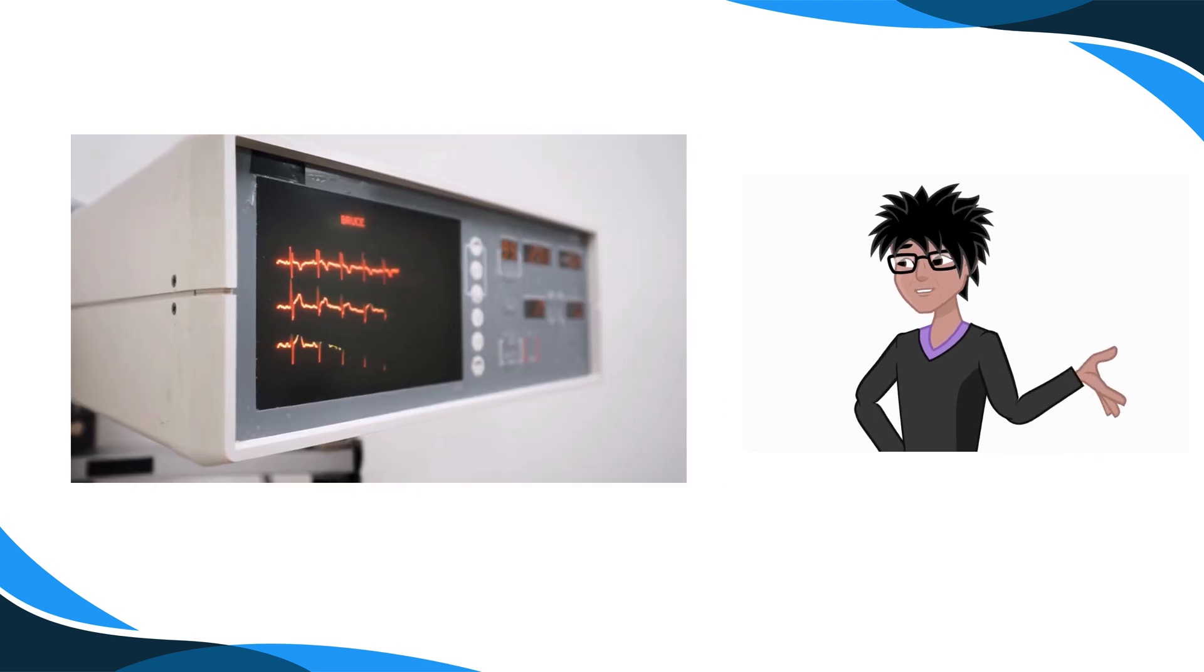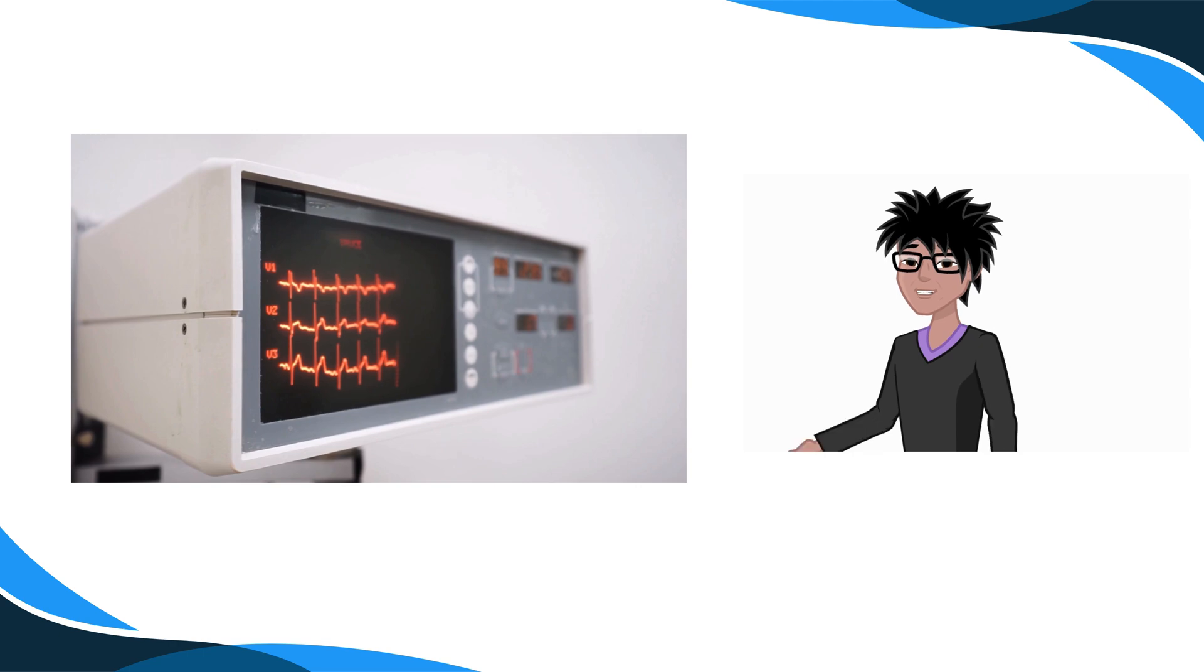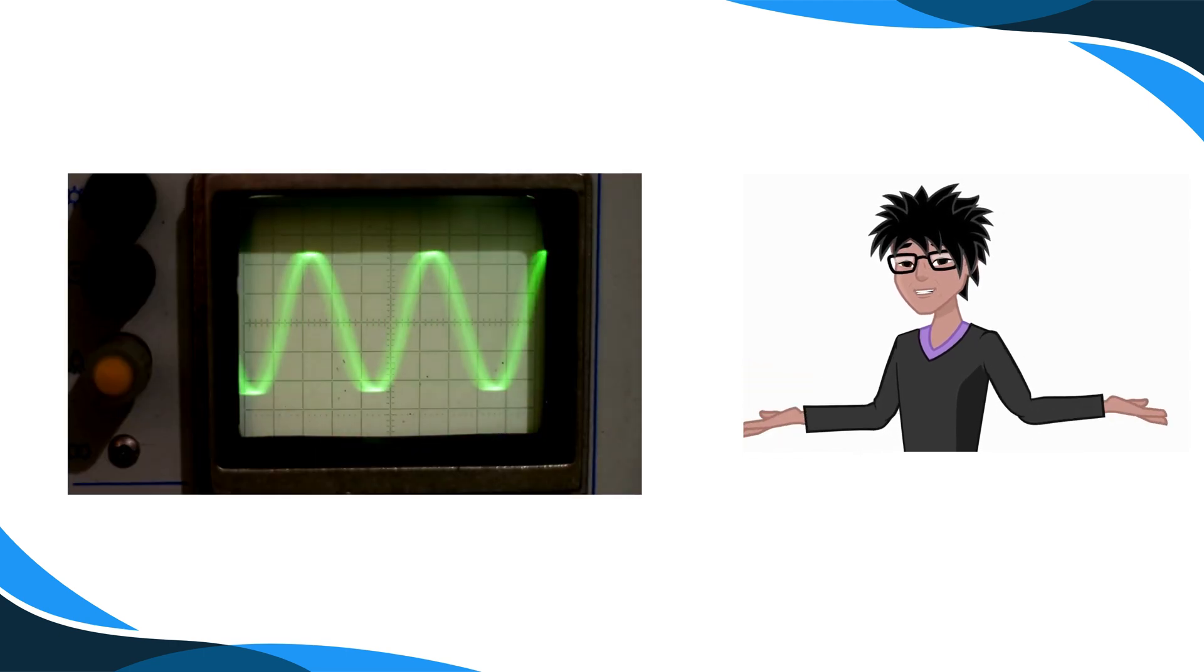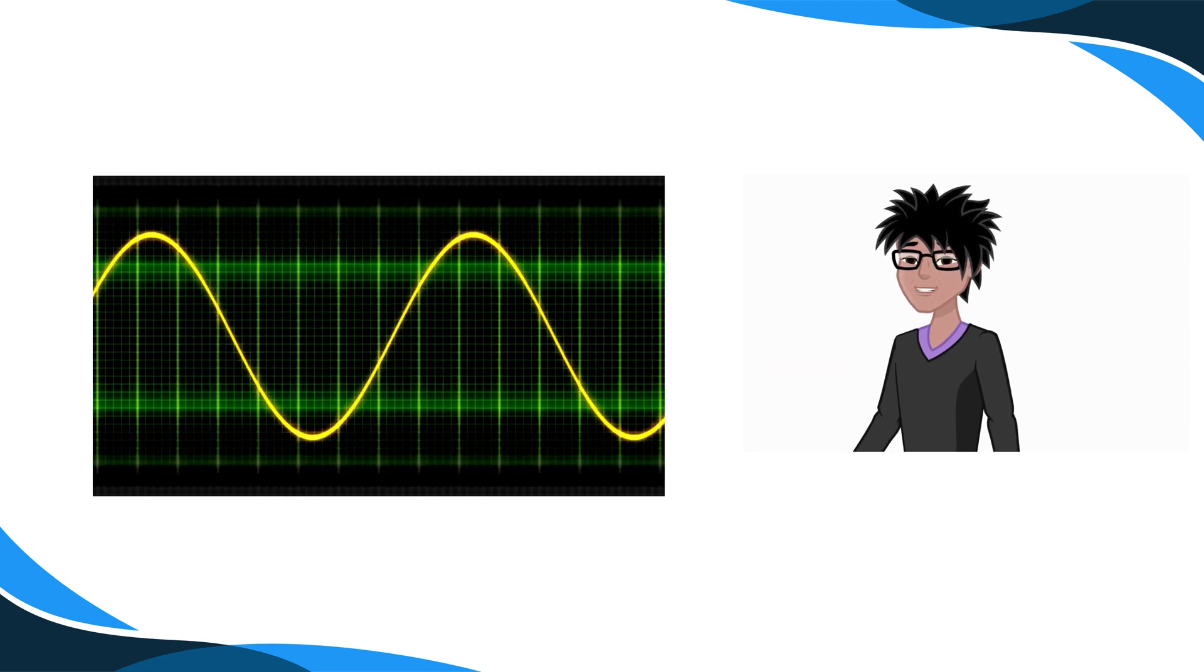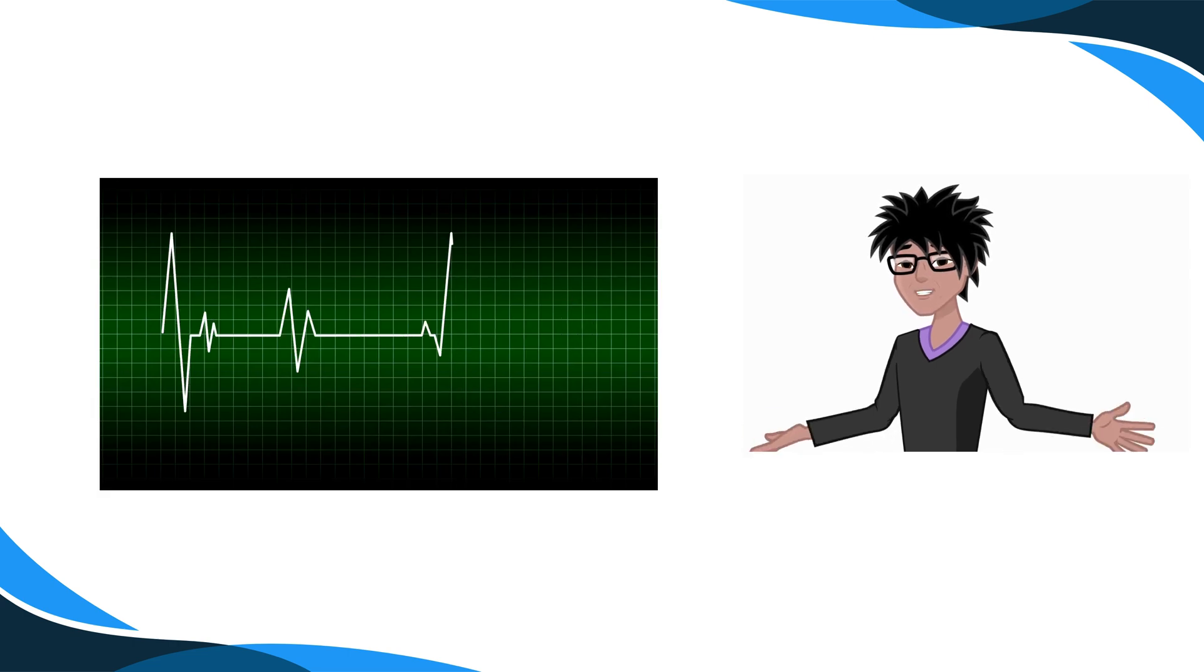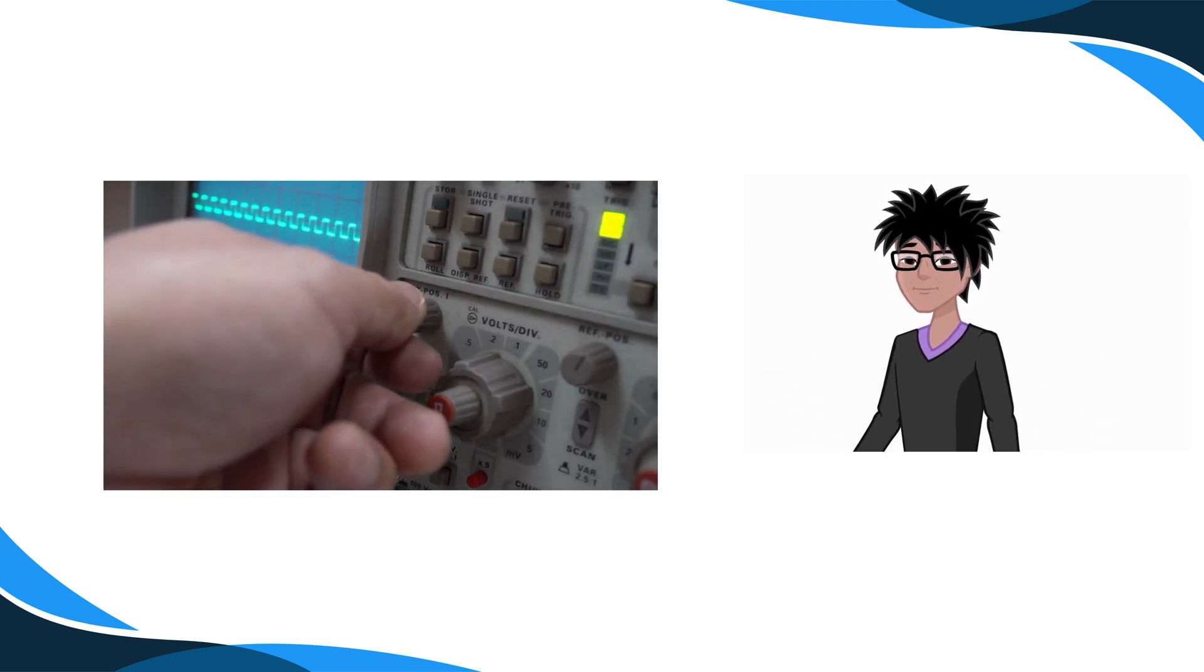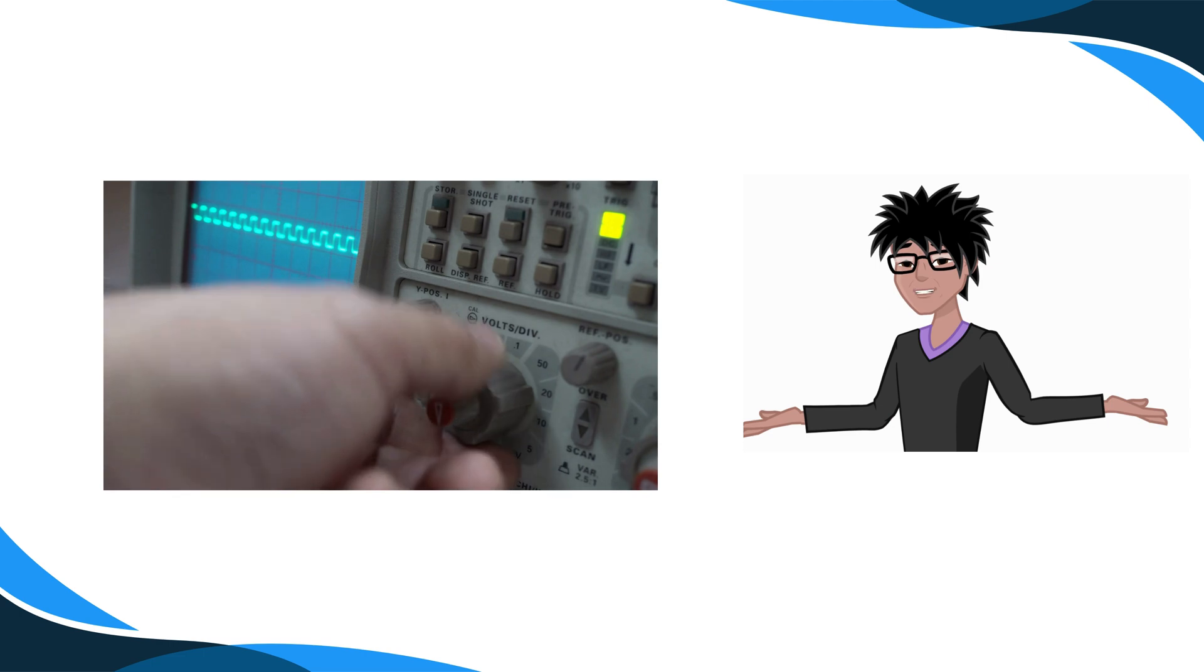The screen is coated with a fluorescent material. When the electron beam strikes it, it glows, creating a visible trace. This is what you see as a waveform. The process is repeated many times per second, so the display appears steady to the human eye. In short, the CRO translates an electrical signal into a visual waveform by using electron beams, deflection plates and a fluorescent screen. A brilliant combination of physics and engineering.